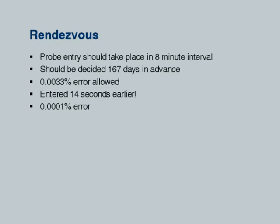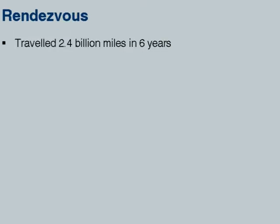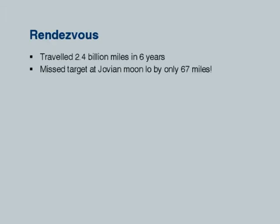Why am I saying all this? It travelled 2.4 billion miles in six years and missed the target — the red Jovian moon Io — by only 67 miles. On this website they say it is almost like shooting an arrow from Los Angeles to New York and missing the bullseye by 4 inches. That is the kind of accuracy that was achieved.